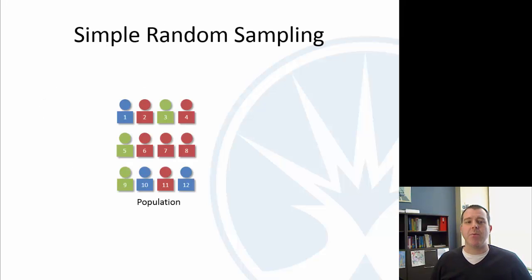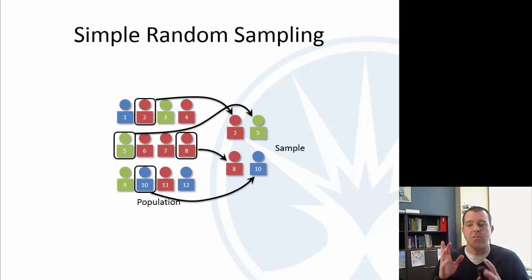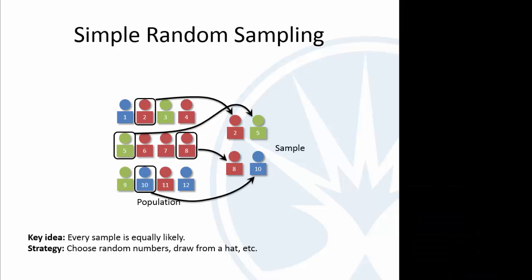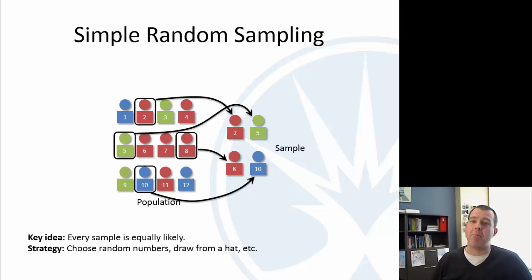So, simple random sampling, say we have our population of 12 individuals here. It would basically be drawing numbers from a hat or using a computer to randomly generate certain numbers, however many you need from that population. So, say we need a sample size of 12. We might say, I'm going to randomly generate something and, just for a case of example, I choose 2, 5, 8, and 10. So, then I have my sample 2, 5, 8, and 10.